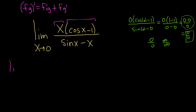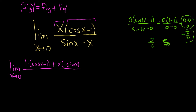So we have the limit as x approaches 0. The derivative of the first is 1 times the second, so cosine x minus 1, plus the first times the derivative of cosine, which is negative sine. Note the derivative of negative 1 is 0, so we don't worry about it. The derivative of the first is 1 times the second plus the first times the derivative of the second — that looks okay.